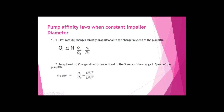Pump affinity laws when constant impeller diameter: consider the impeller diameter is constant and the speed is going to change. This law helps us determine the flow rate, pump head, and brake horsepower due to changes in speed. For relationship 1.1 between Q and N: flow rate changes directly proportional to the change in speed of the pump. Q is directly proportional to N, so Q1/Q2 = N1/N2.